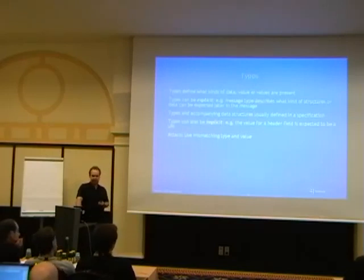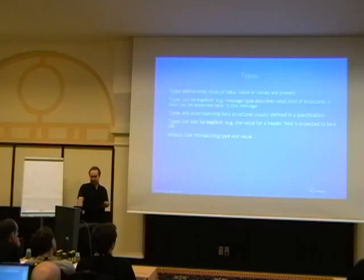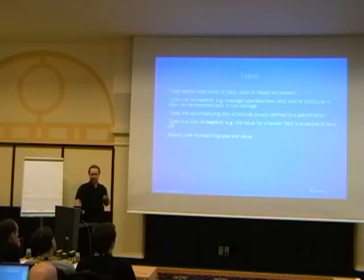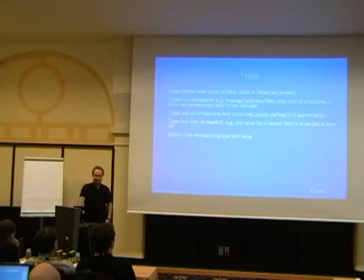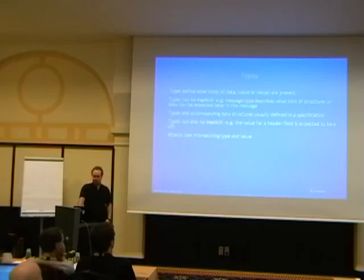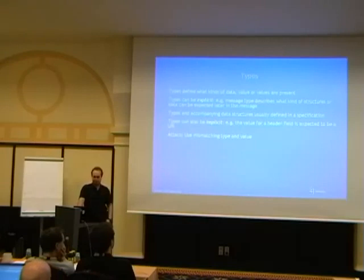When you know there is an explicit type field, you can just start attacking it right away — change the type into something different. You already undermine the expectations of the software, which is expecting a completely different structure for the value that comes later. You might also have implicit types — a header field in an ASCII protocol where the value is expected to be a URI, for instance. You should always try to mismatch types and values, and use types that are not defined in the specification.